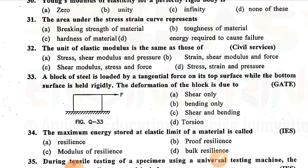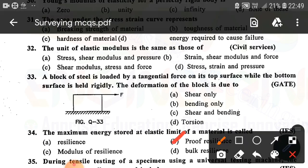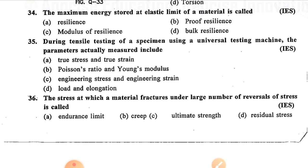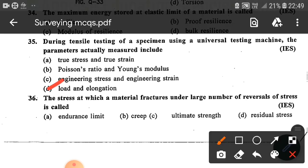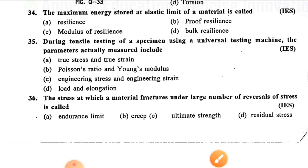Question number thirty-three: A block of steel is loaded by a lateral force on its top surface while the bottom surface is held rigidly; the deformation of the block is due to — option C is correct — shear and bending. Question number thirty-four: The maximum energy stored at the elastic limit of a material is called — option B is correct — proof resilience. Question number thirty-five: During tensile testing of a specimen using a universal testing machine, the parameters actually measured include — option D is correct — load and elongation. Question number thirty-six: The stress at which a material fractures under a large number of reversals of stress is called — option A is correct — endurance limit.